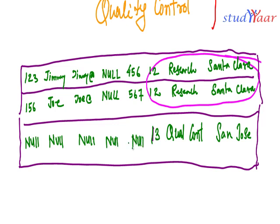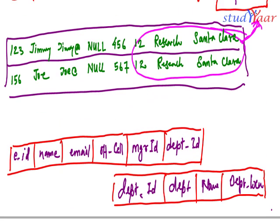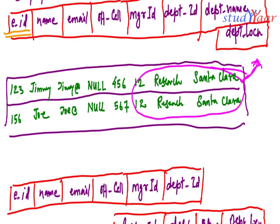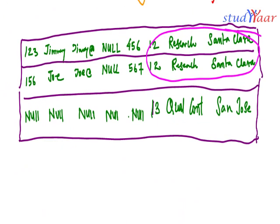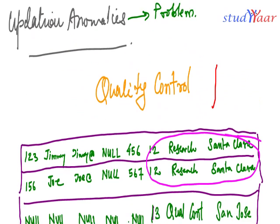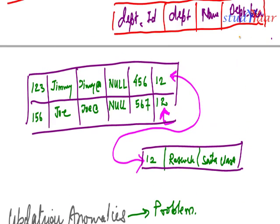Just realize that in this schema, employee ID is going to be the primary key, because I am storing information about employees — their email, cell number, manager ID, and departmental details. My primary key is employee ID, but here I am storing null in my table. So that is a problem — I cannot insert information about a new department until I have at least one employee working in that department. That is an insertion anomaly.